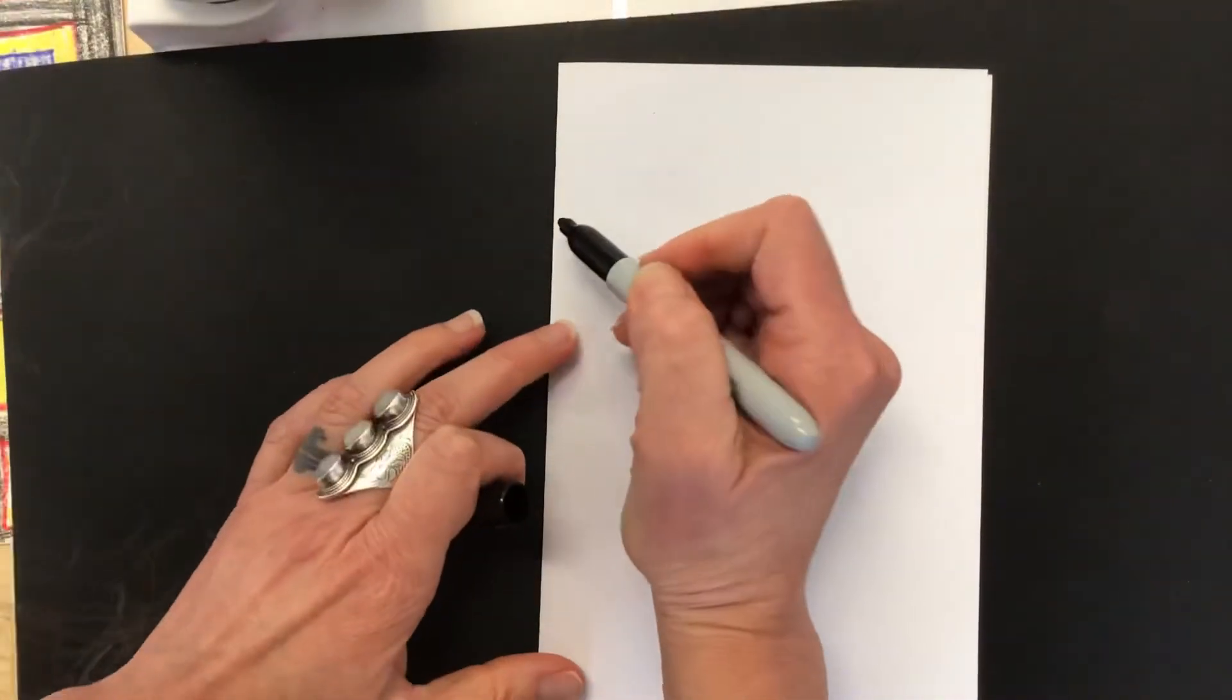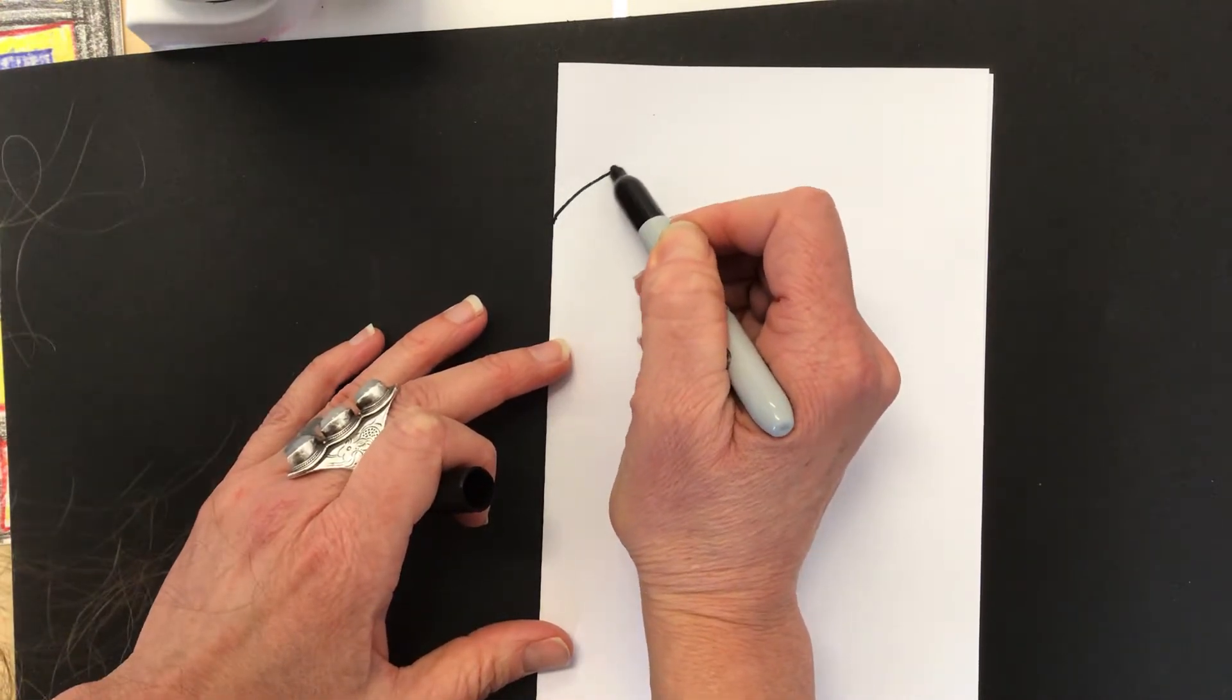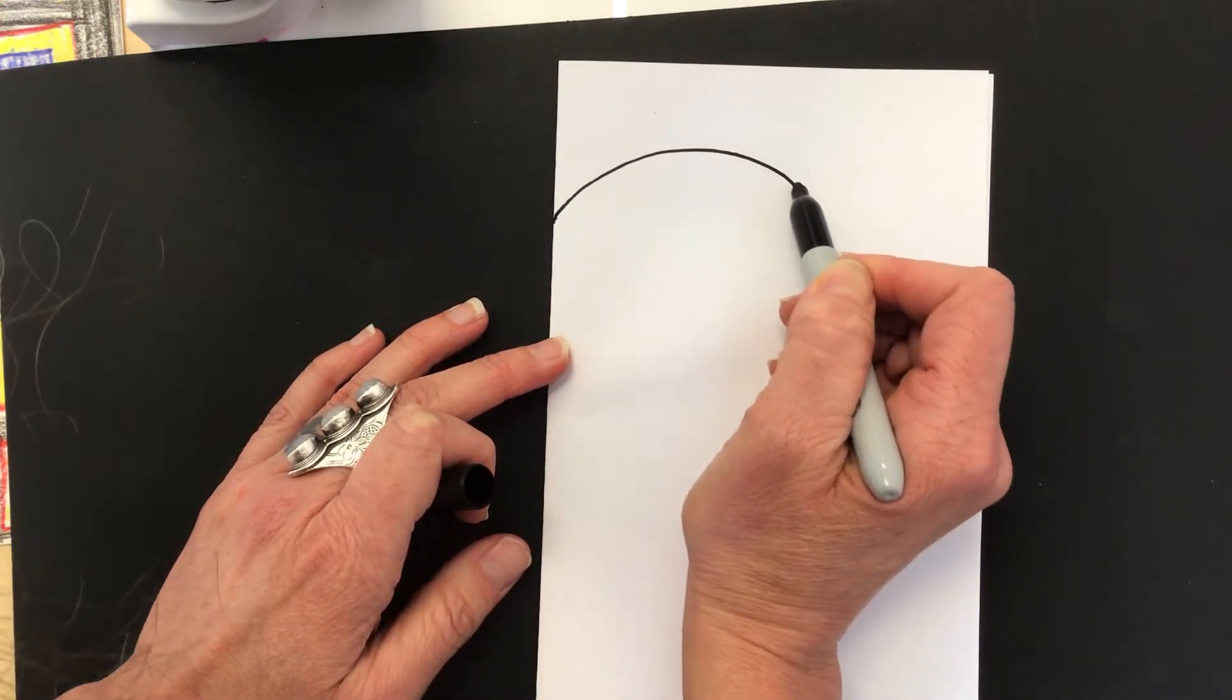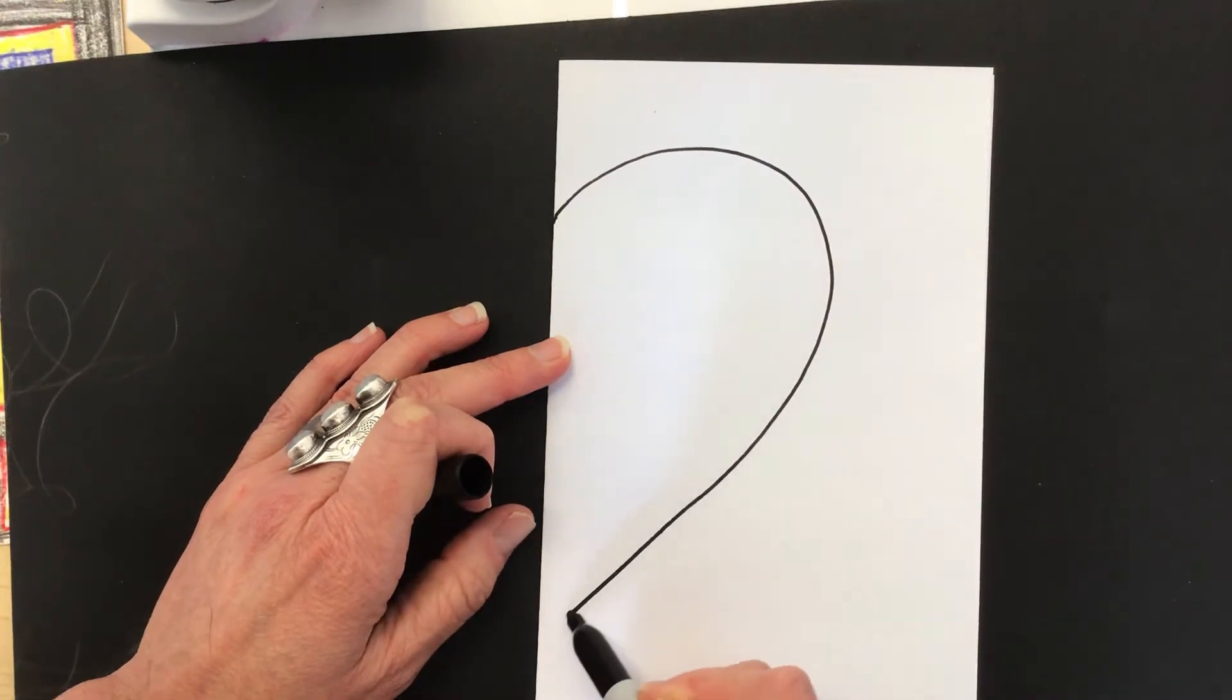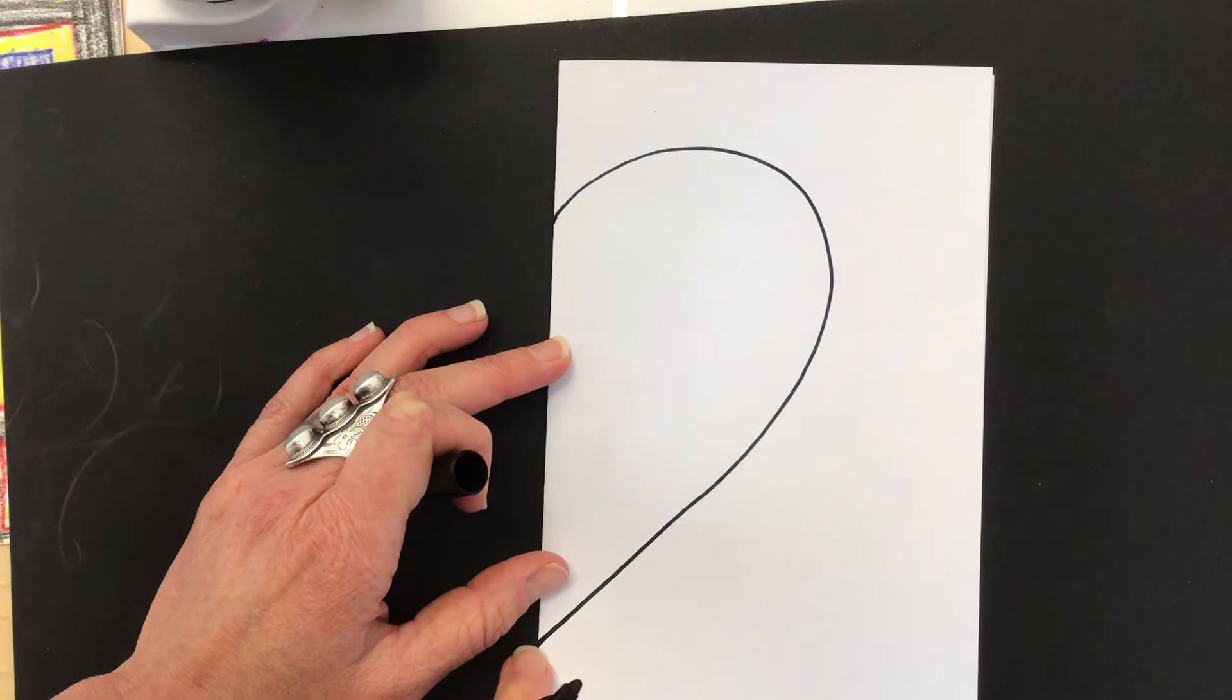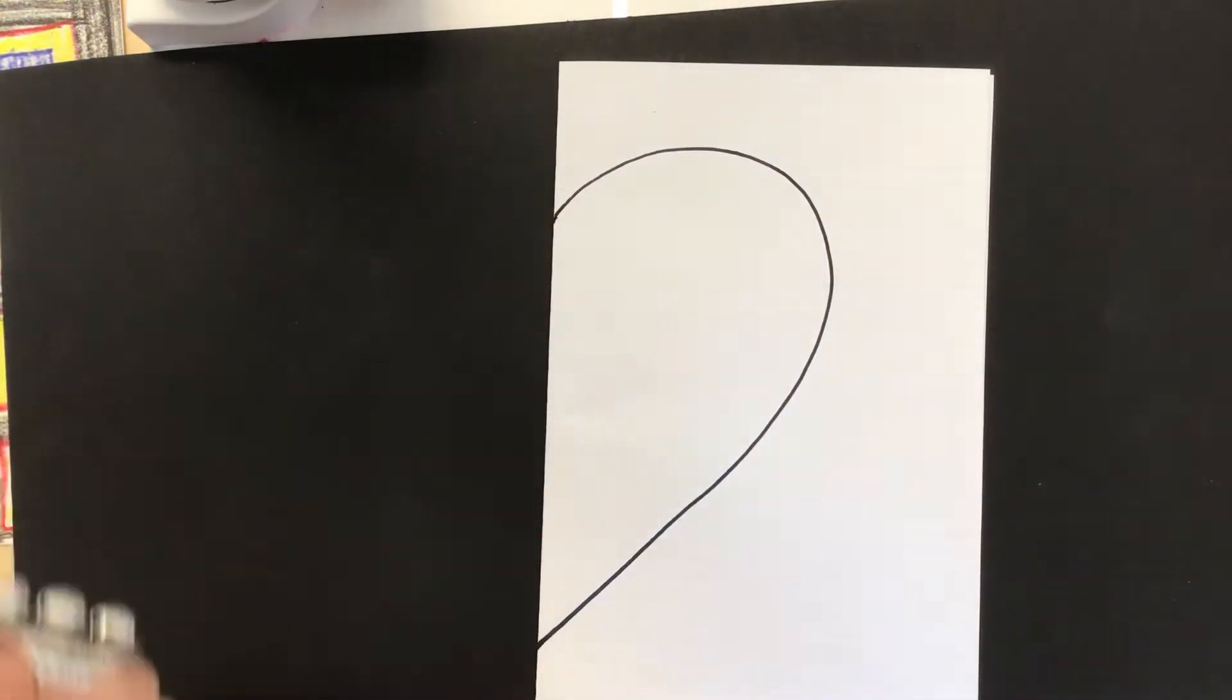I'm going to start with my pencil or my marker right at the fold, and I'm going to make my curving ear shape or question mark come out, and then come all the way down to a point. Now, make sure that you stop before you get to the bottom of the paper. That is really key for what we're doing next. Here is my half a heart shape.